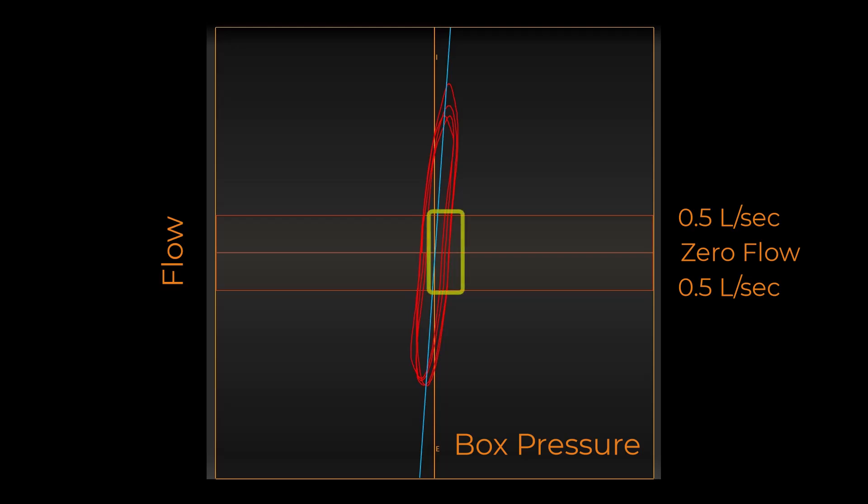Unlike lung volumes, airway resistance efforts take only the data between the two red flow lines and ignore the data above and below the flow lines when setting the line of best fit. Because of the limited data between the flow lines, adjusting the open shutter panting will become more frequent than the closed shutter breathing.